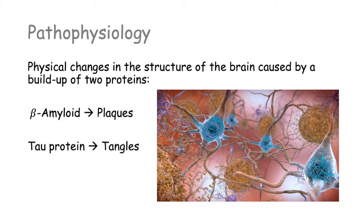These are beta-amyloids and tau. Here in this image, we can see neurons and these clusters of proteins in orange — these are the beta-amyloid plaques that cluster together outside of neurons. And inside the neurons, we have these blue proteins clustered together as well. These are the tau proteins, forming tau tangles and beta-amyloid plaques.